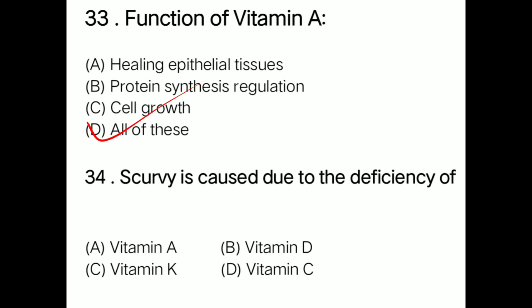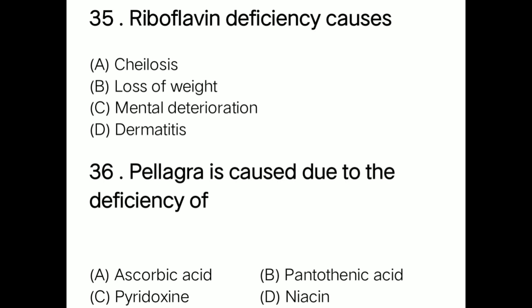Question: Scurvy is caused due to the deficiency of option A vitamin A, option B vitamin D, option C vitamin K, option D vitamin C. Correct answer is option D: deficiency of vitamin C causes scurvy. Question: Riboflavin deficiency causes option A chelosis, option B dermatitis. Correct answer is option A: chelosis. Riboflavin deficiency causes chelosis.